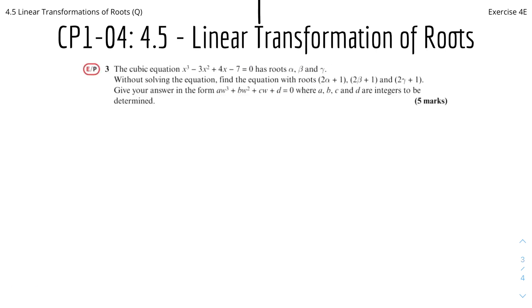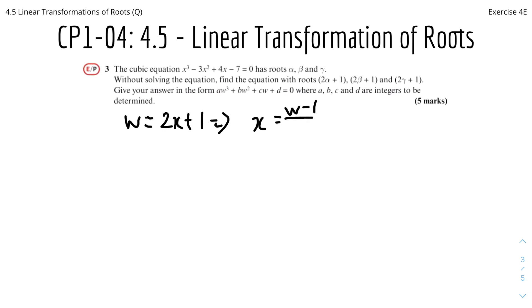Moving on to the next question: we have the cubic equation x cubed minus 2x squared plus 4x minus 7, with roots alpha, beta, and gamma. Without solving the equation, find the equation with roots 2 alpha plus 1, 2 beta plus 1, and 2 gamma plus 1, giving your answer in the specified form. We set w equal to the root, which is 2 alpha plus 1, 2 beta plus 1, 2 gamma plus 1 — replacing alpha, beta, gamma with x gives w equals 2x plus 1. Rearranging, x equals (w minus 1) over 2.